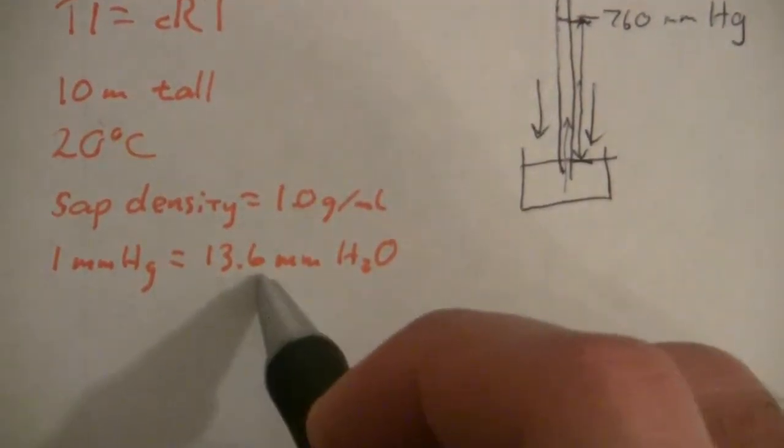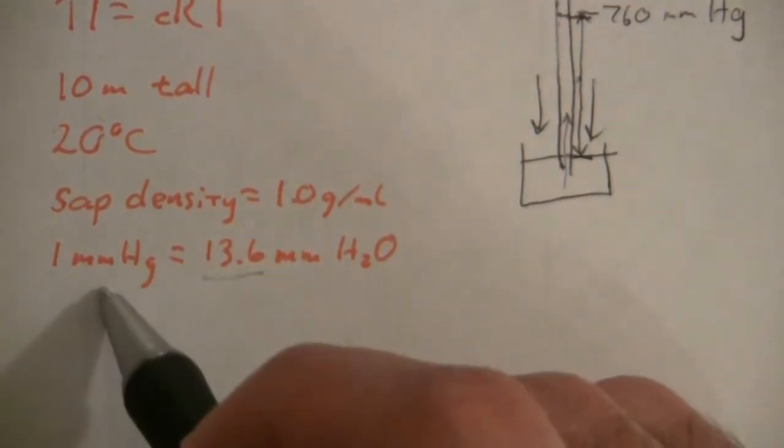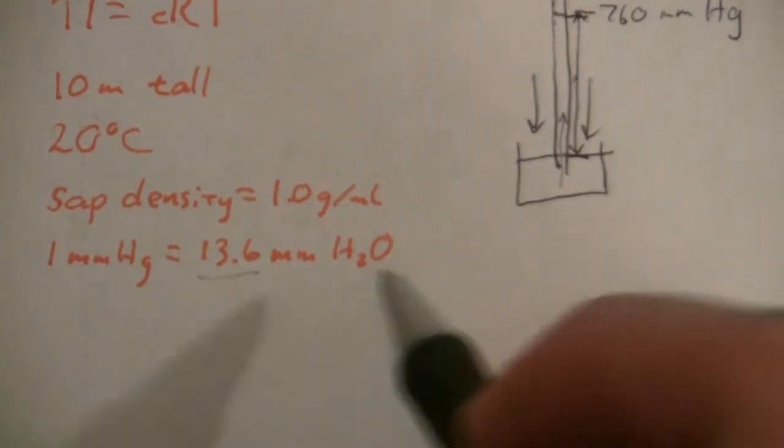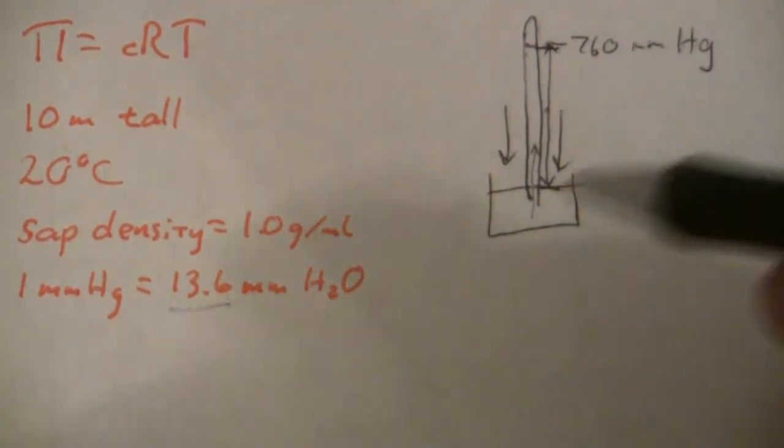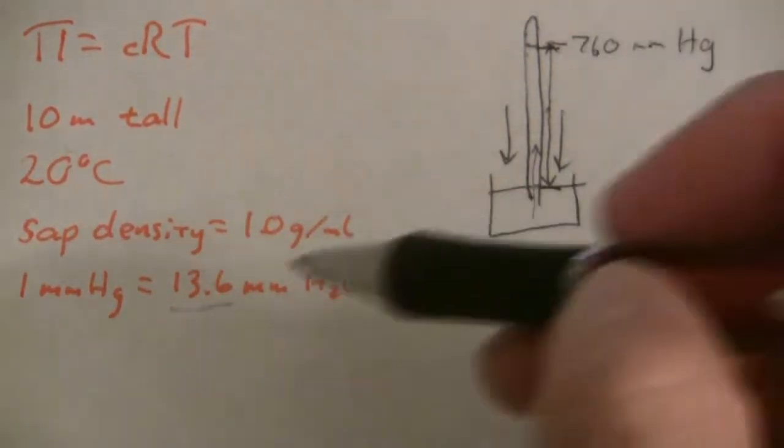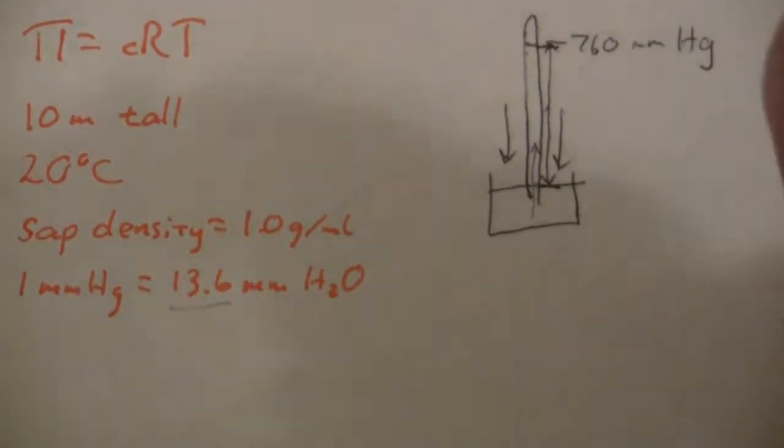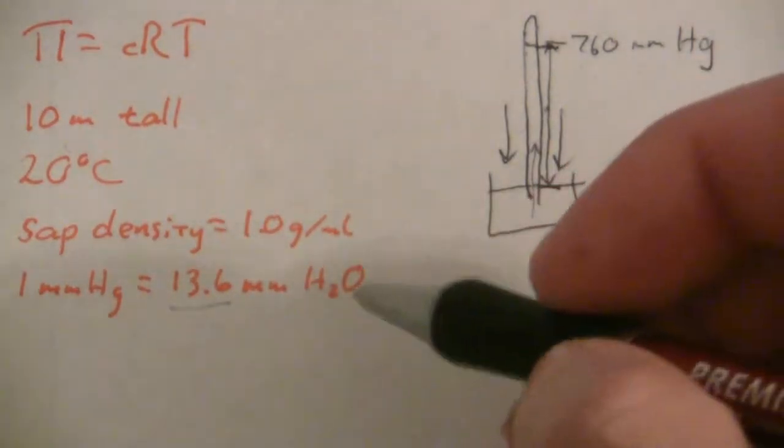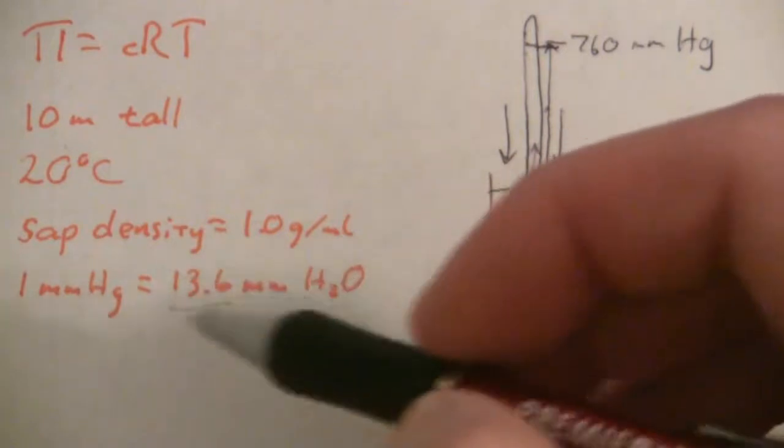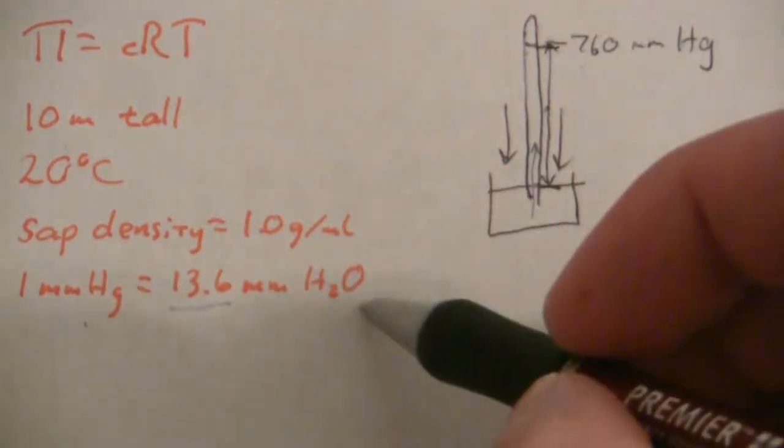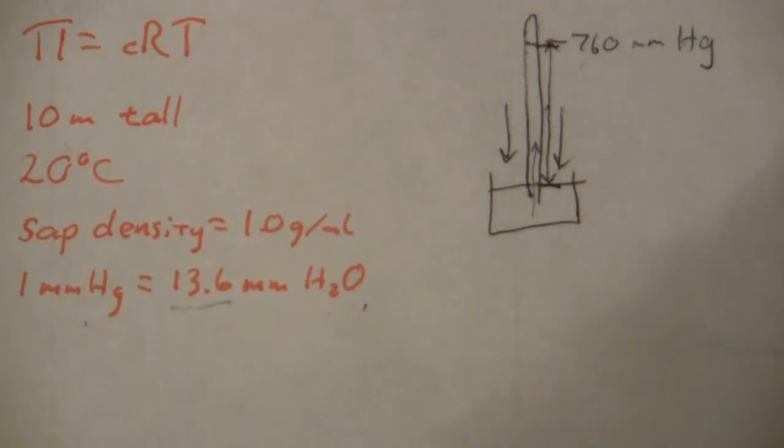Mercury's density is 13.6 grams per milliliter. Notice that's our conversion between millimeters mercury and millimeters of water. Because for every millimeter of mercury, there's 13.6 millimeters of water because it's one gram per milliliter there. So that's from the ratio of the densities of mercury and water.